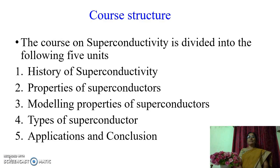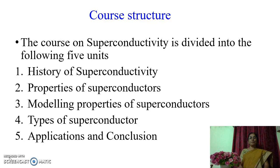The course on superconductivity is divided into the following five units. The first unit will be about the history of superconductivity. The second unit is dedicated to properties of superconductors. The third unit will discuss modeling properties of superconductors. The fourth unit will discuss the types of superconductors. And the fifth and last unit will cover applications and conclusions.